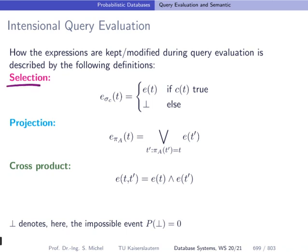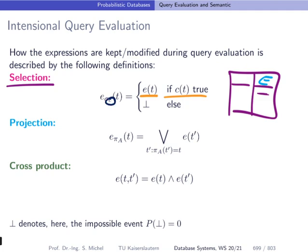If we have a selection, so we have a table with some attributes, and now we have here our special column E, and we have a selection over this relation, basically how do we modify these expressions or these equations in the column E? We just take them if the predicate applied to our tuple is true. So here's our selection predicate C. In all other cases, the tuple will be dismissed from the result because it does not qualify the predicate.